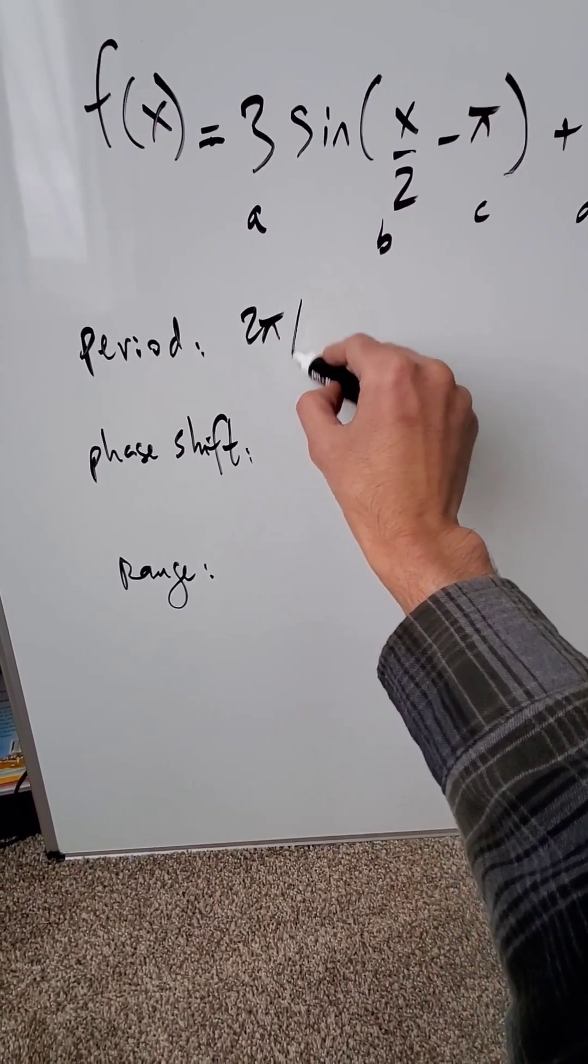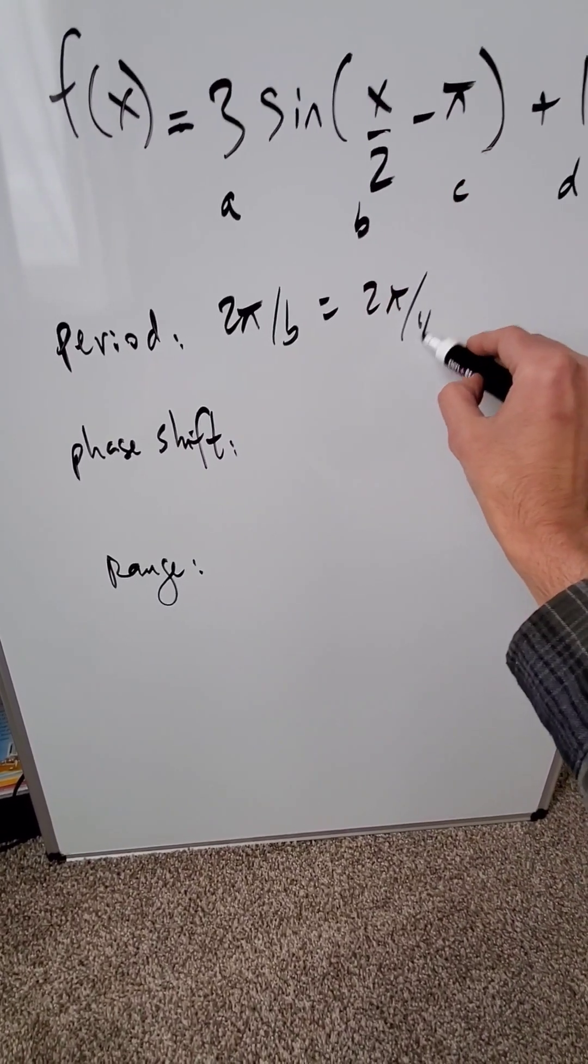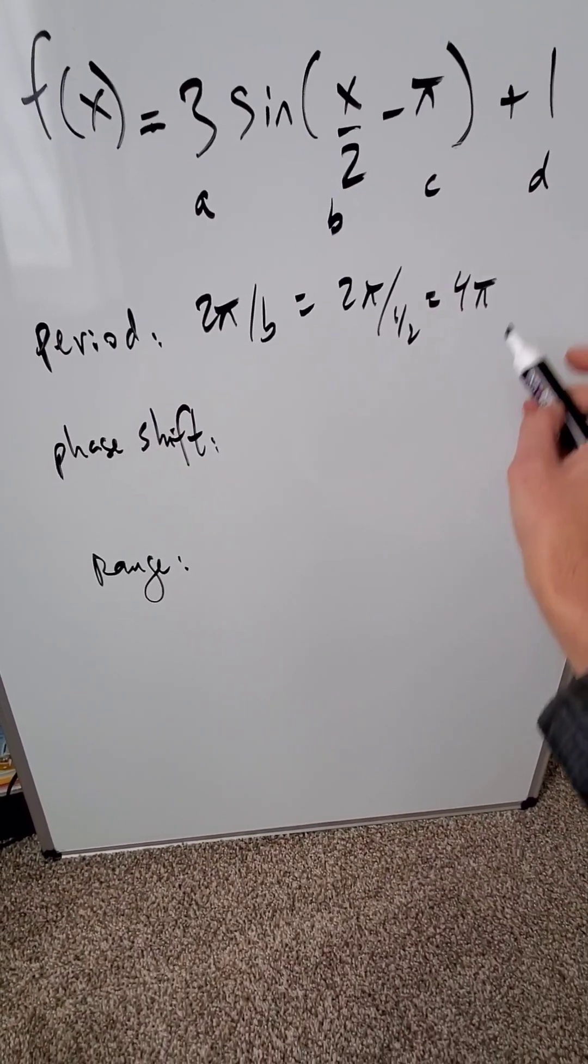The period is always given by the formula 2 pi over b. We have a 2 pi over b value, which is 1 over 2, and when you compute this, you're getting here a period of 4 pi.